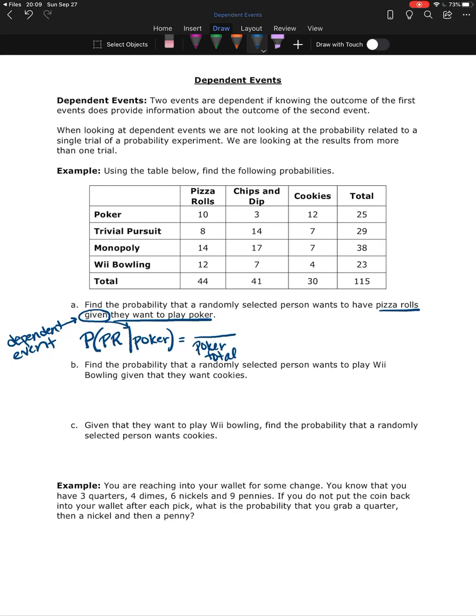So poker total is going to become the denominator of this fraction. And then the numerator is going to be people that wanted pizza rolls and poker. Looking at the total for poker, 25 people want to play poker. How many of those 25 people also wanted to have pizza rolls? There were 10 people who wanted to play poker and wanted to have pizza rolls. So 10 over 25 is 0.4.